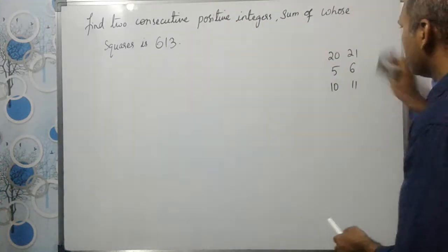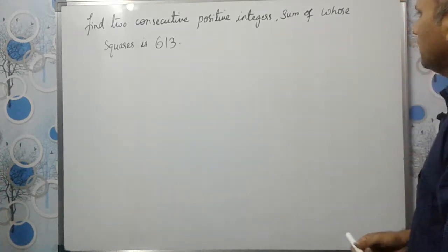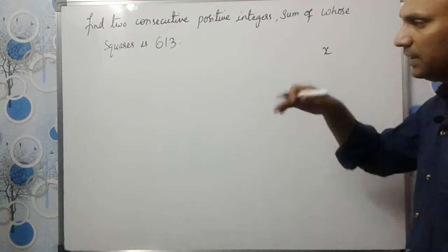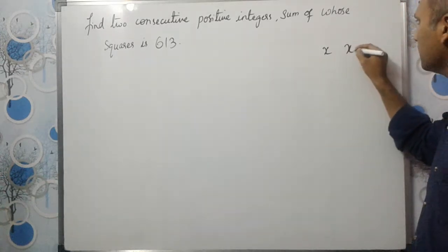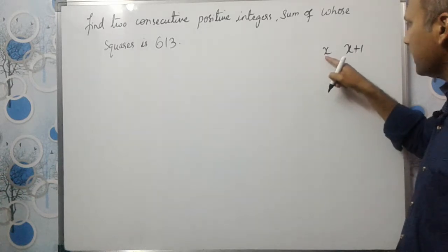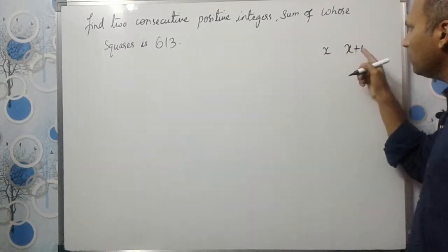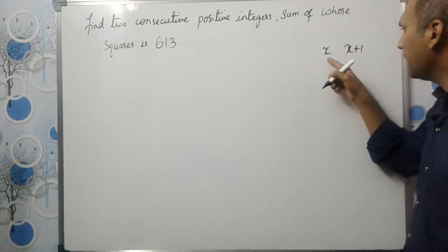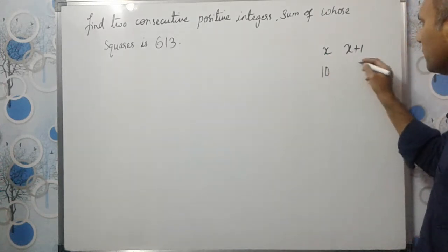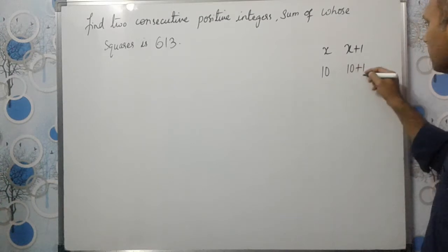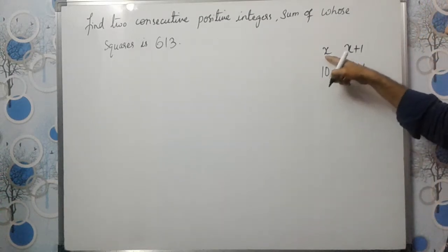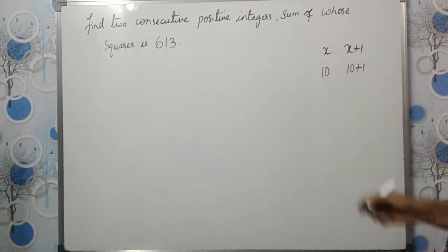Now, if you take the first consecutive number as x, the next consecutive number will be x plus 1. The next immediate number is always one more than the previous one. For example, if we take 10, the next one is 11, and we can write 11 as 10 plus 1. So I took the first number as x and the next consecutive number as x plus 1.